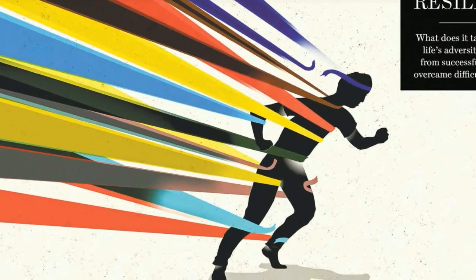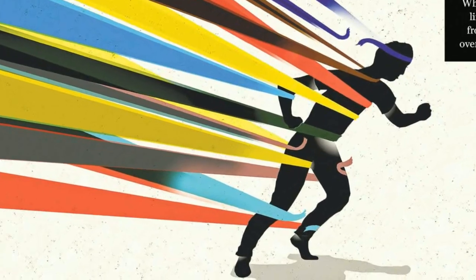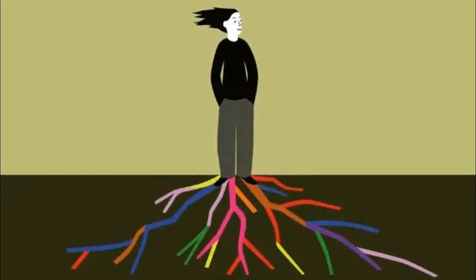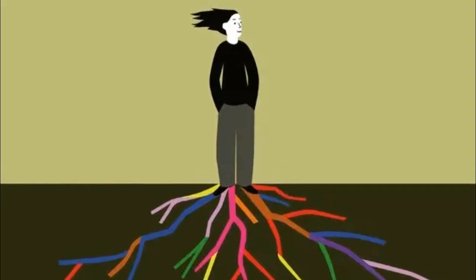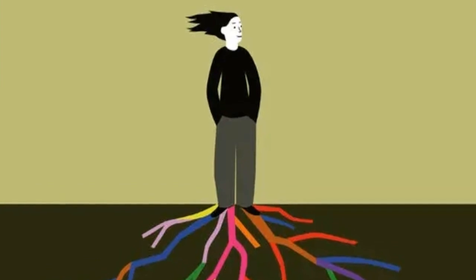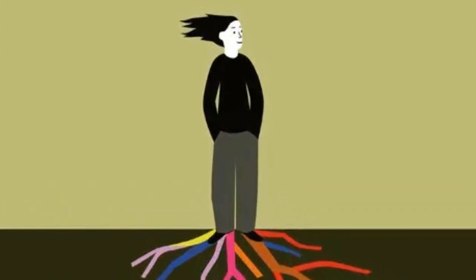3. Character. The third aspect is the development of good qualities and good conduct by thinking judiciously about right and wrong.